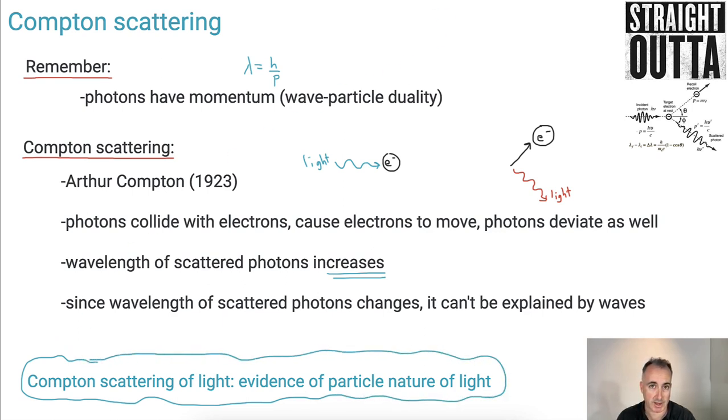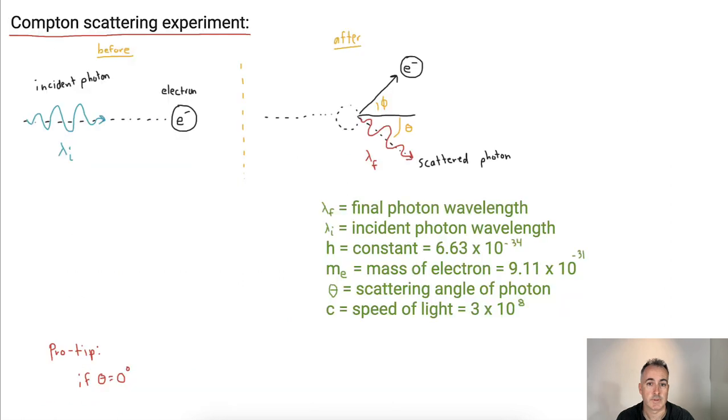We learned that sometimes light can behave like a particle or like a wave. In this experiment, we have an incident photon which is coming in with a wavelength lambda i, the incident or initial photon wavelength in meters. It's going to be slamming into this stationary electron. That's before.